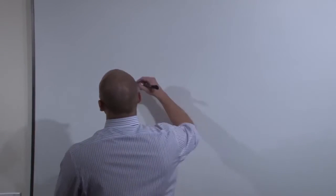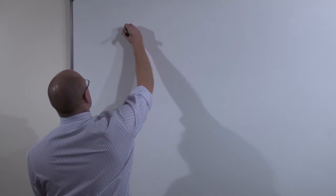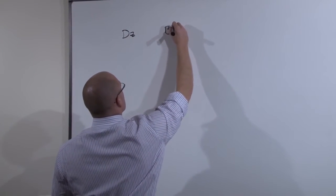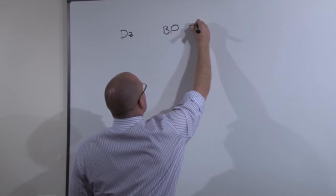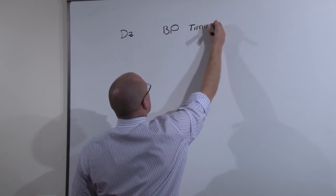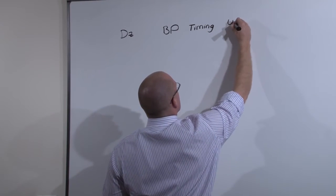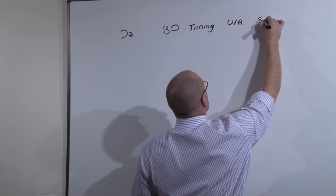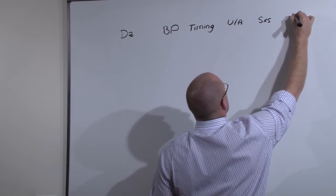We're going to use a table that's going to compare the disease, blood pressures, timing of onset, what's going on with the urinalysis, what's going on with symptoms, and what you need to do to treat.